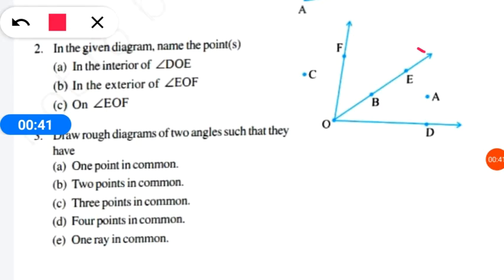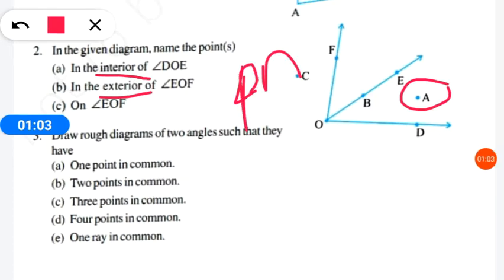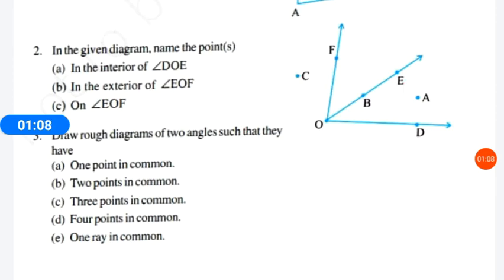We need to identify the interior point of this angle. As we know, interior means inside, and exterior means outside. So point A is our answer — point A is in the interior of angle DOE.